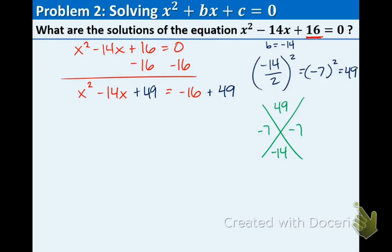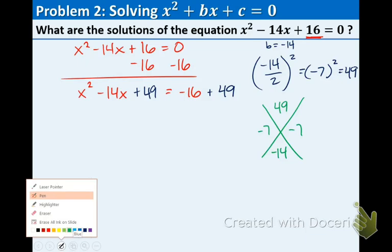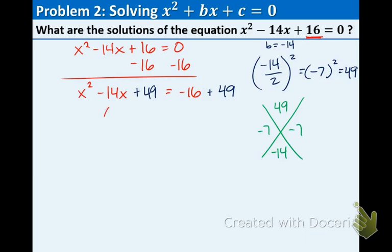So now we can go back to our quadratic and rewrite this as x minus 7 times x minus 7. And the other side, we might as well combine like terms and get 33. Now you're thinking to yourself, wait a second, x minus 7 twice, can't we just rewrite that as x minus 7 squared? And yes, you are correct.